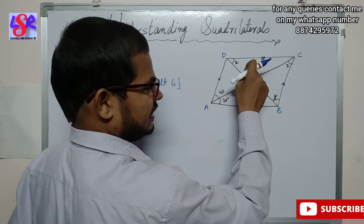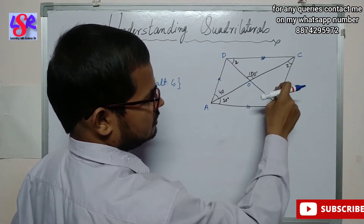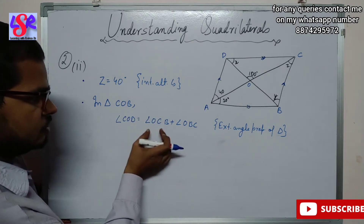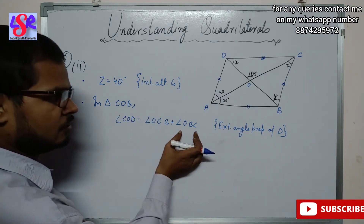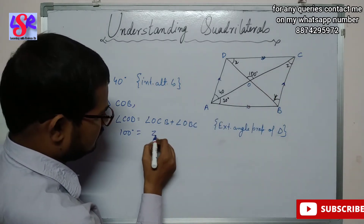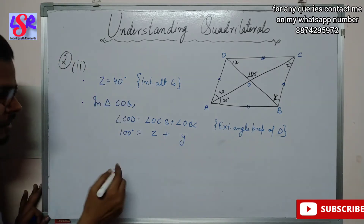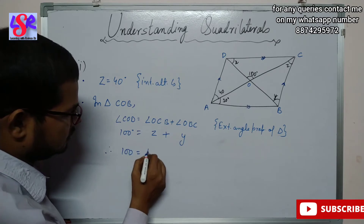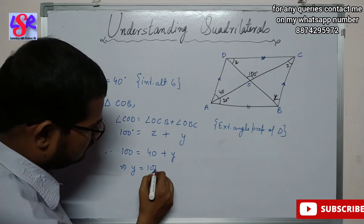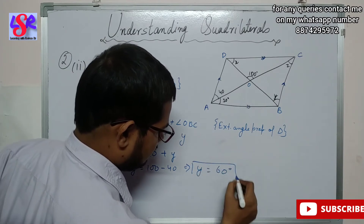Also in this triangle, the exterior angle COD equals the sum of the two interior opposite angles Z and Y. So Z plus Y equals 100 degrees. In triangle COB: angle COD equals angle OCB plus angle OBC, that is Z plus Y. Placing Z as 40: 100 equals 40 plus Y, so Y equals 60 degrees.